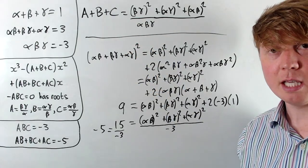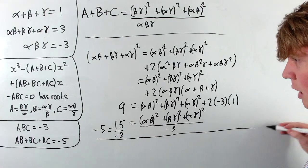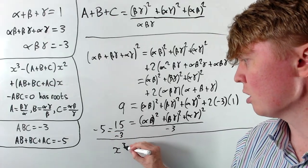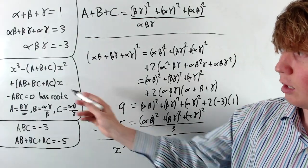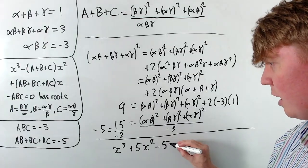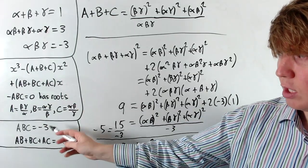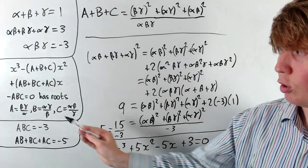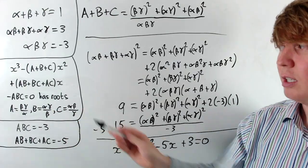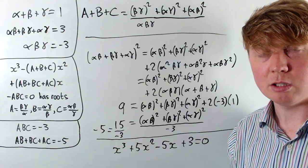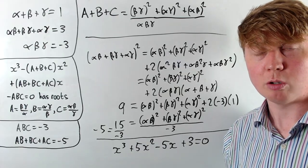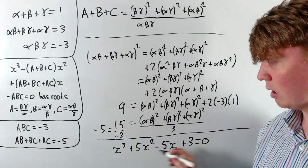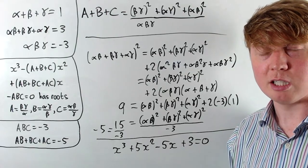We're now ready to write the final cubic. We have x cubed minus negative five times x squared, giving plus five x squared, then minus five x (the coefficient of x), then minus the product ABC which is minus negative three, giving plus three, all equal to zero. So the answer is x cubed plus five x squared minus five x plus three equals zero. It's really interesting that by using Vieta's formulas and these algebraic identities, we get a clean solution without ever having to directly solve either cubic.